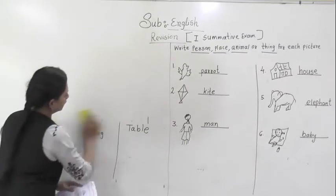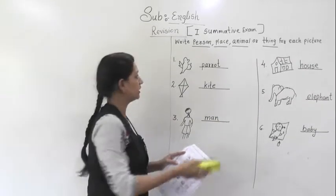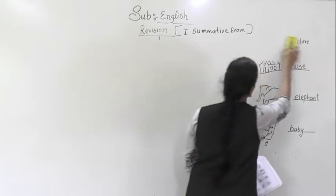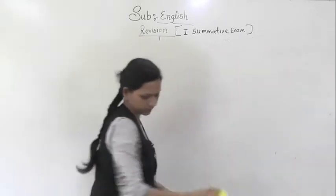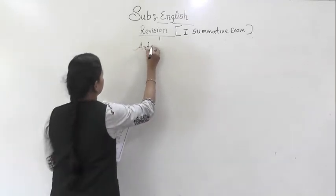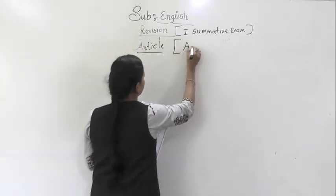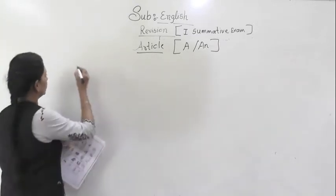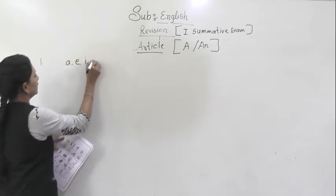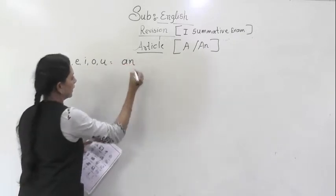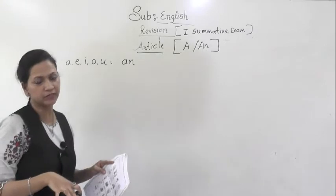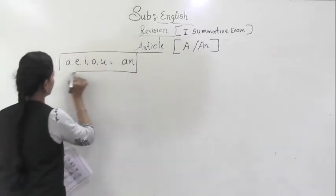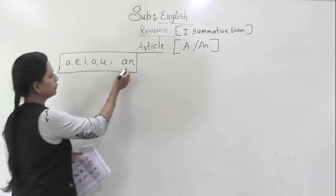Now, about article we are going to learn. What are the articles? We use a or an before vowel and the consonant. Article a and an. So, there are some pictures. See now here. A, E, I, O and U. We use an. And the remaining alphabets we use a. So, just keep in mind this part only. Before a, e, i, o, u we use an.